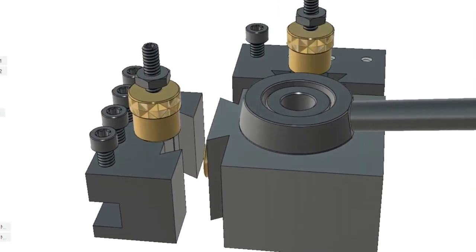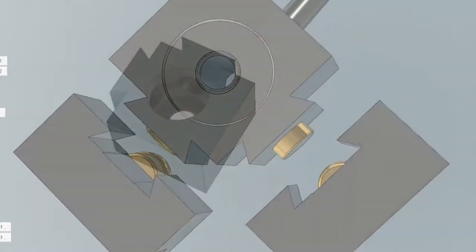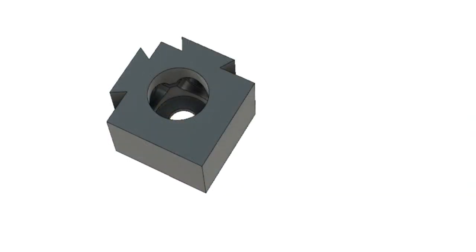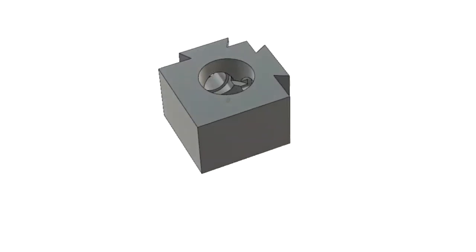Here I show multiple views in Fusion 360. In this next scene I turn on the parts one by one to show how the quick change tool is assembled.